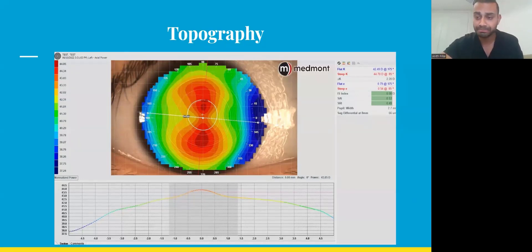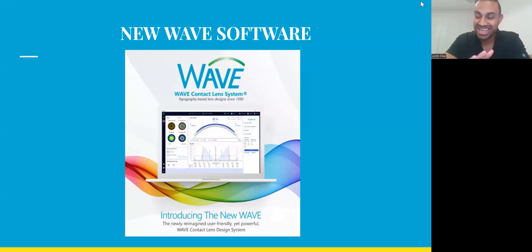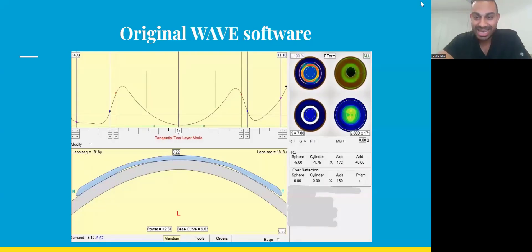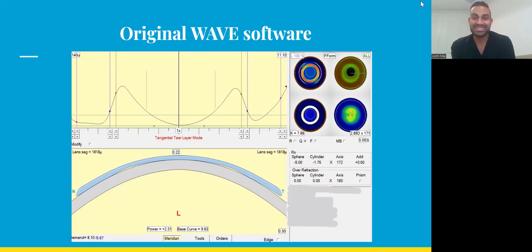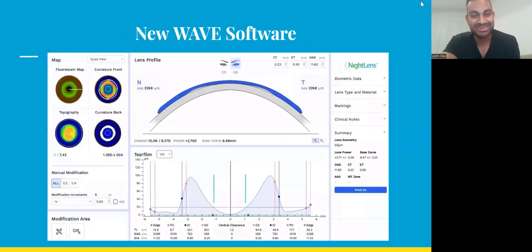Now let's talk about the new Wave software. To start, here's the original Wave software, which shows the tear film profile on top and the RGP profile below, with four images on the right showing a simulated fluorescein pattern, imported corneal topography, and anterior and posterior surfaces.